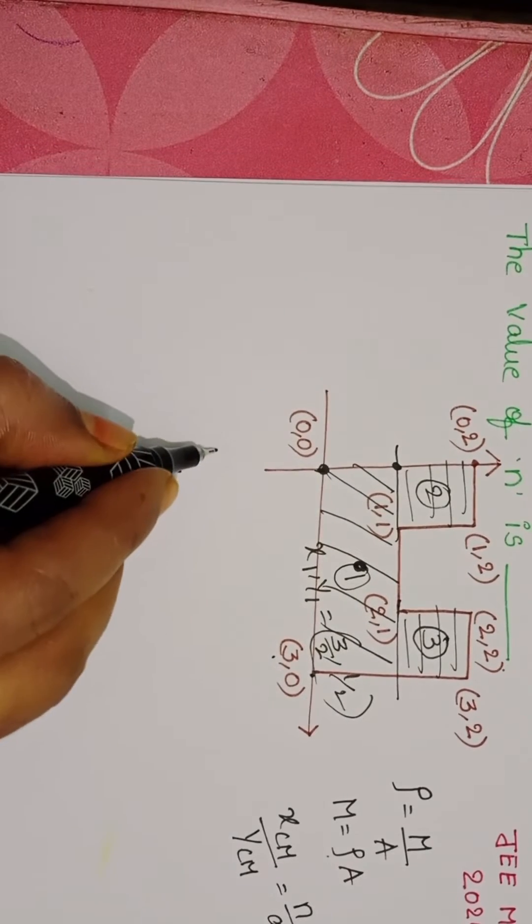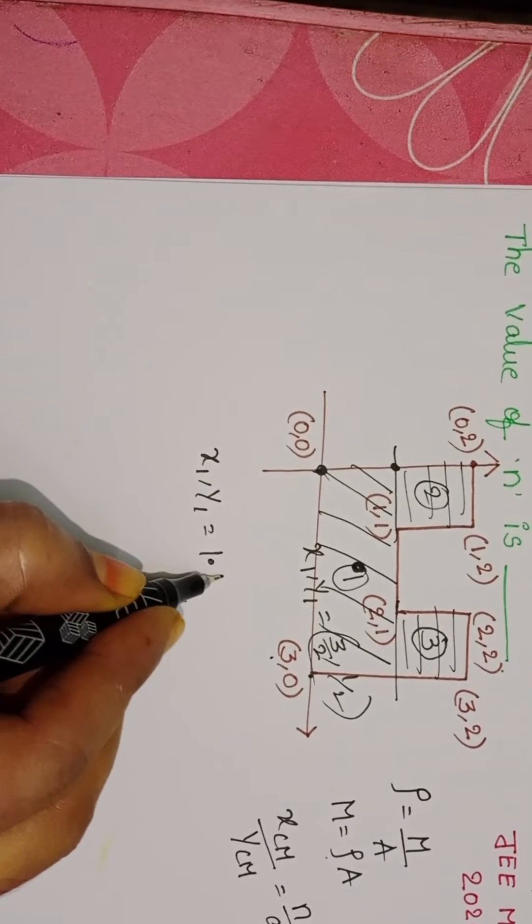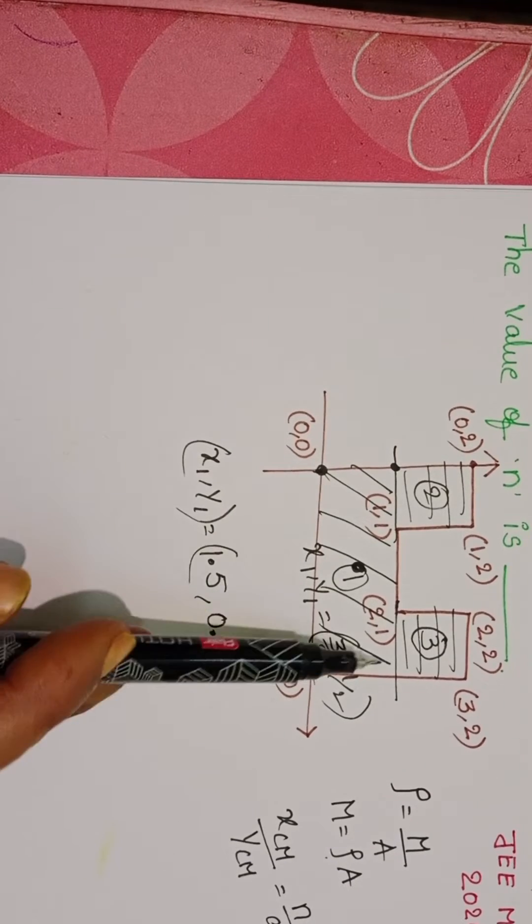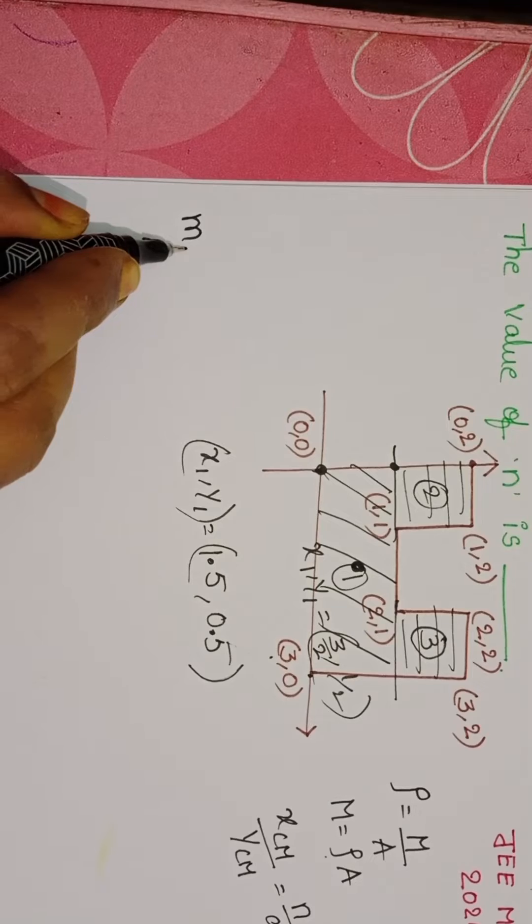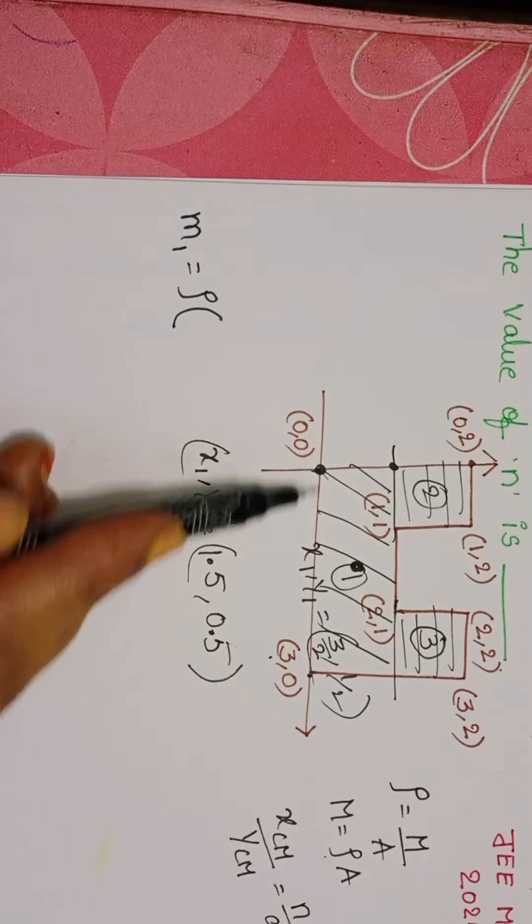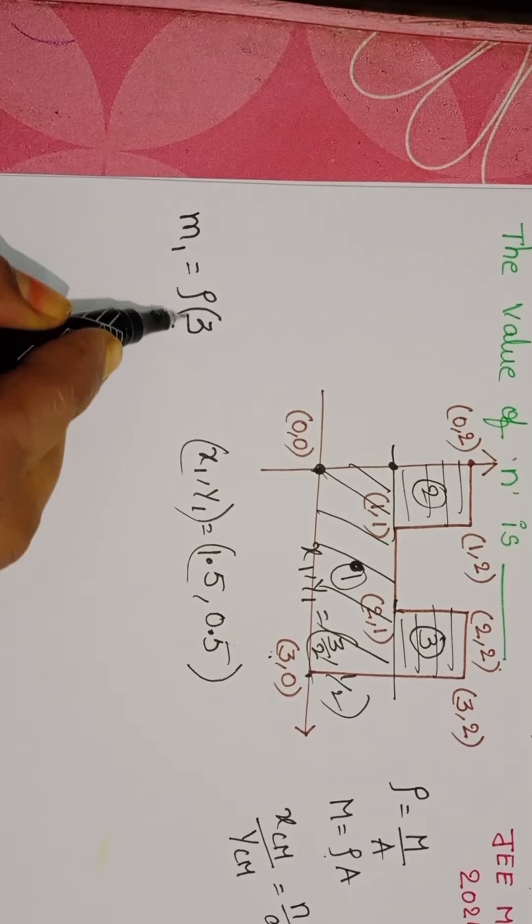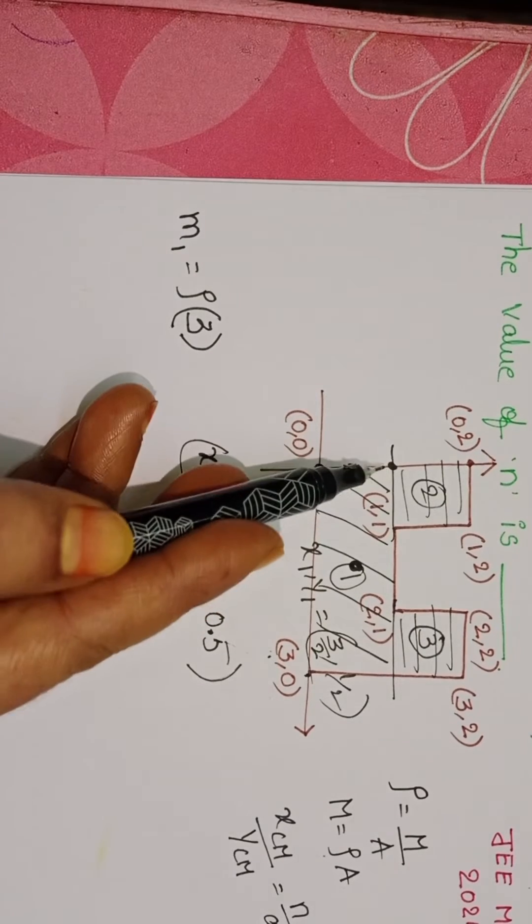3 by 2 equals 1.5, 1 by 2 equals 0.5. And what about the mass of this part? M1 equals rho into area. From horizon to this point 3, 3 into 1, equals 3. This is mass of the first part. And now check the mass of the second part.